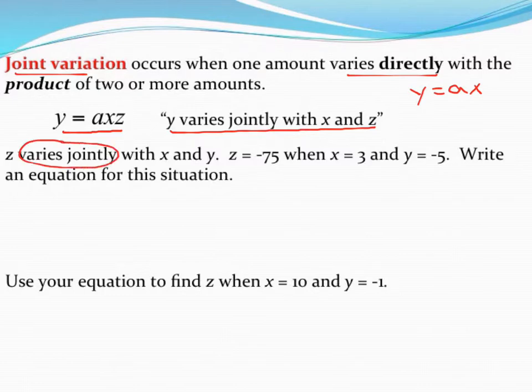y equals a times, and then just start multiplying out all your variables. Now, my piece of advice, unlike the x and y problems which are fairly simple and we always start with y equals, with these just go in the order the variables are presented. So z comes first, so we'll start with z equals, and there's always going to be an a, a constant of variation. Don't forget that.